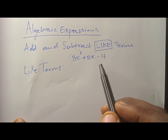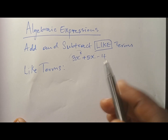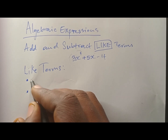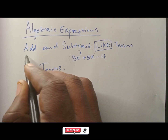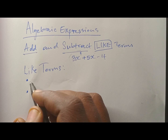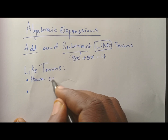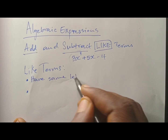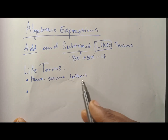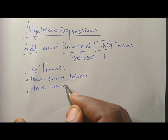In these three terms we don't have like terms. Like terms are identified by two conditions: number one, the terms must have the same letters; number two, they must also have the same exponents. Both conditions must be met before you can add or subtract.